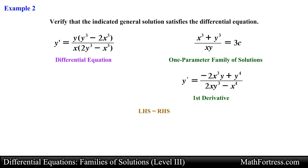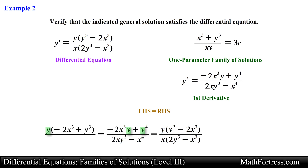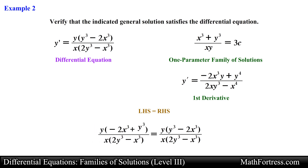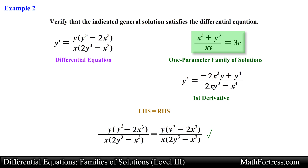Now let's proceed with the substitution step. Substituting the first derivative into the differential equation results in the following expression. Notice that we can factor out a y term in the numerator and factor out the variable x in the denominator. Lastly, we can rearrange the factor in the numerator so that it matches the right-hand side of the equation. Since both sides are equivalent, we conclude that this one-parameter family of solutions is indeed a general solution to the differential equation.